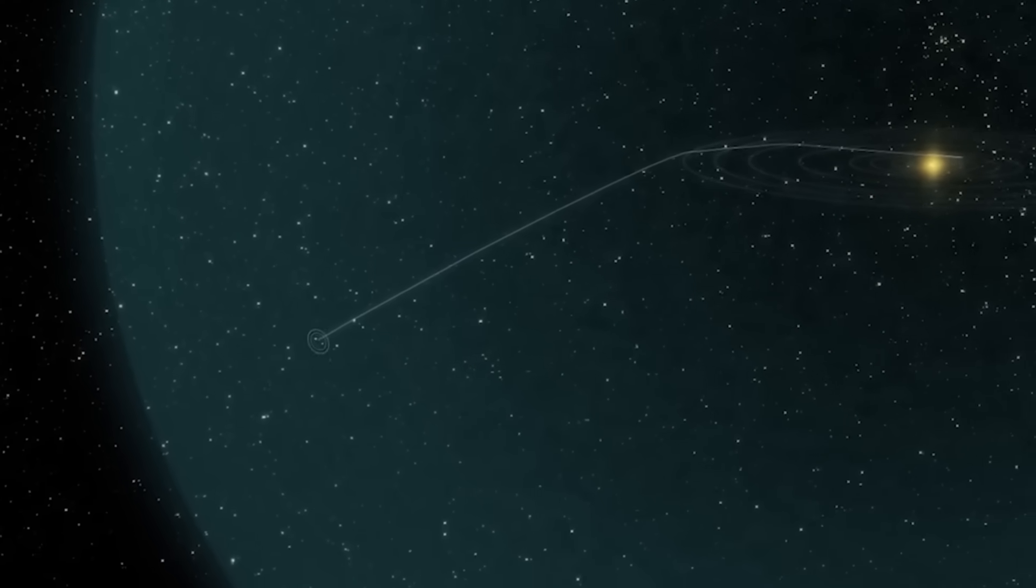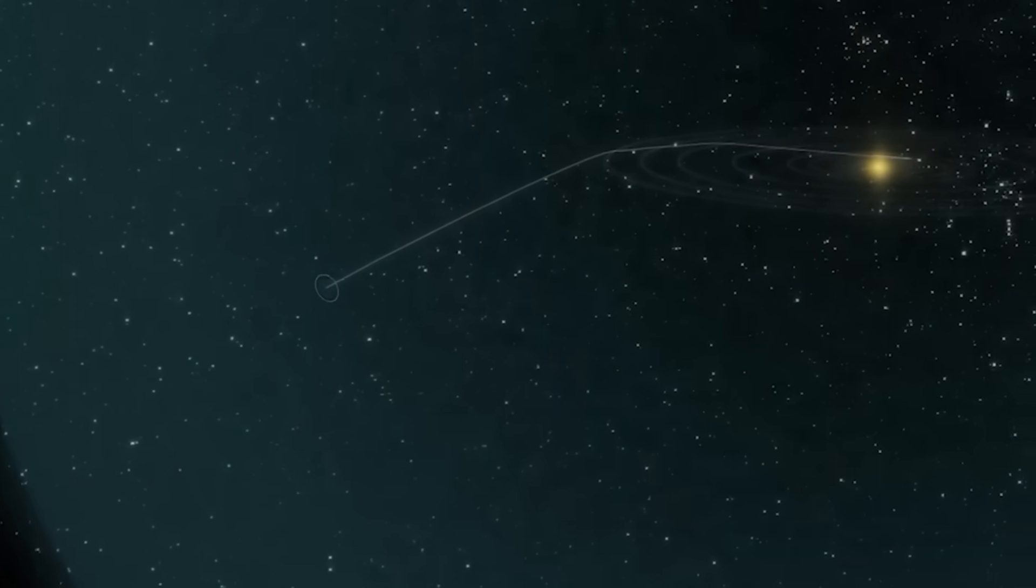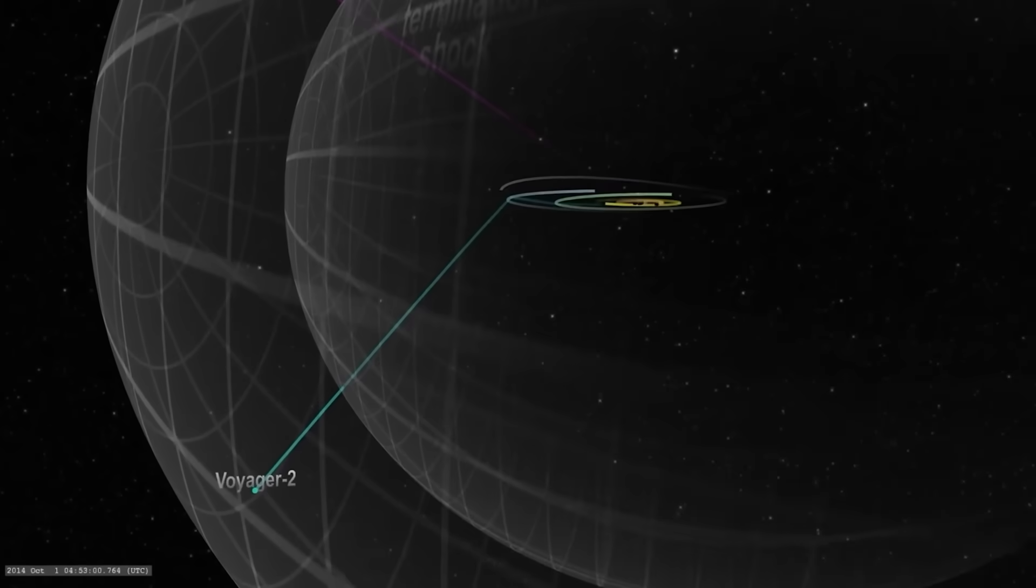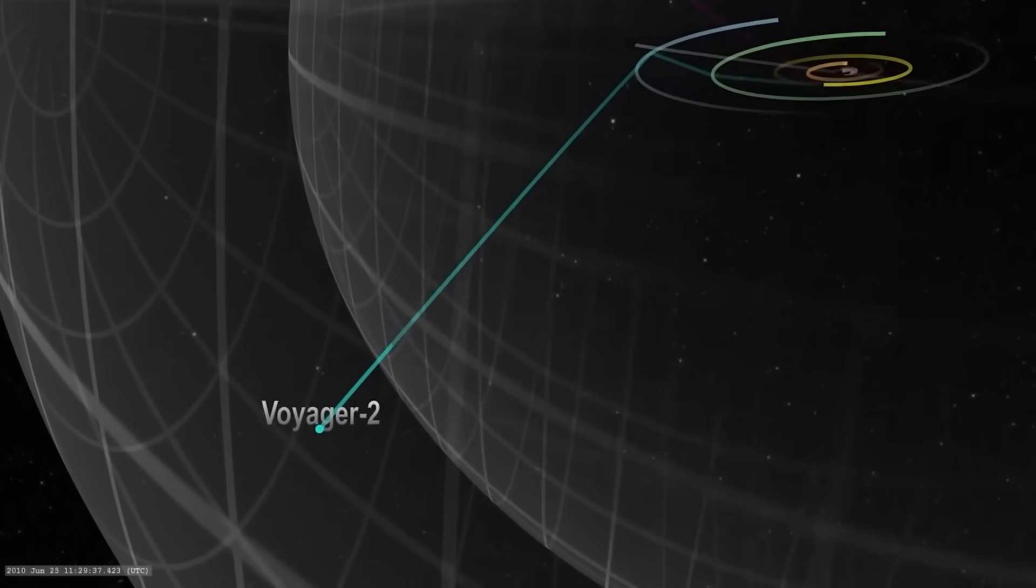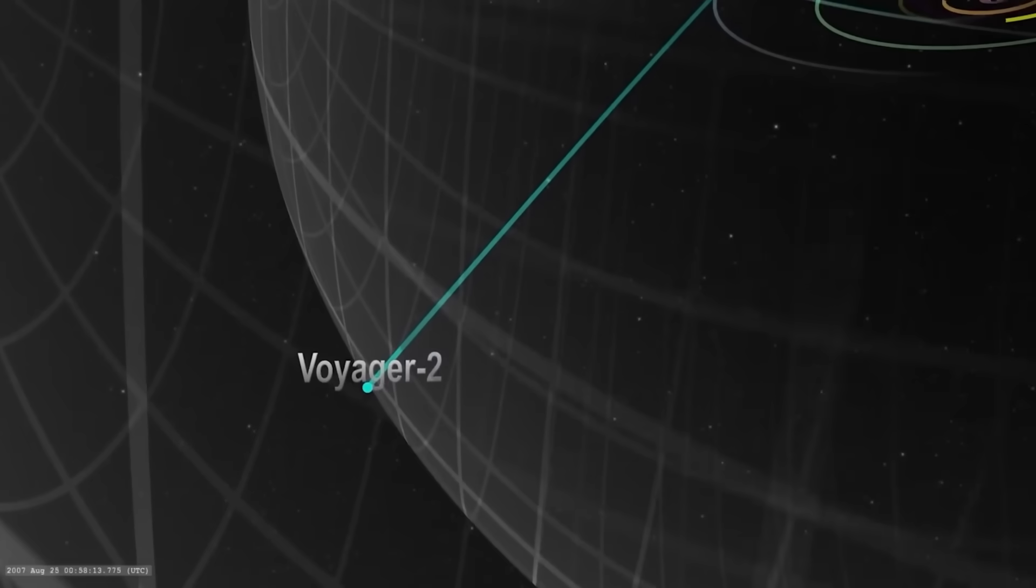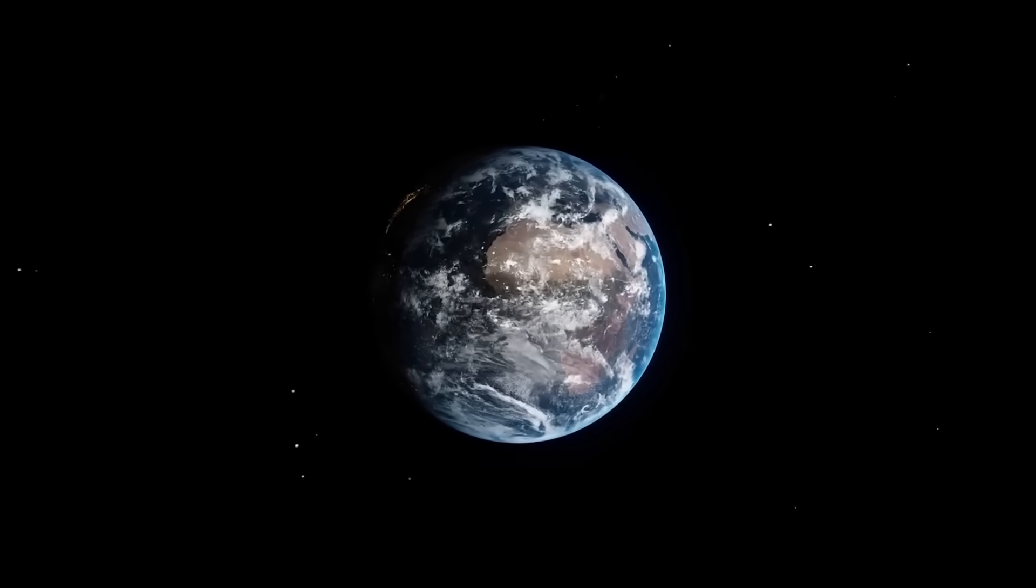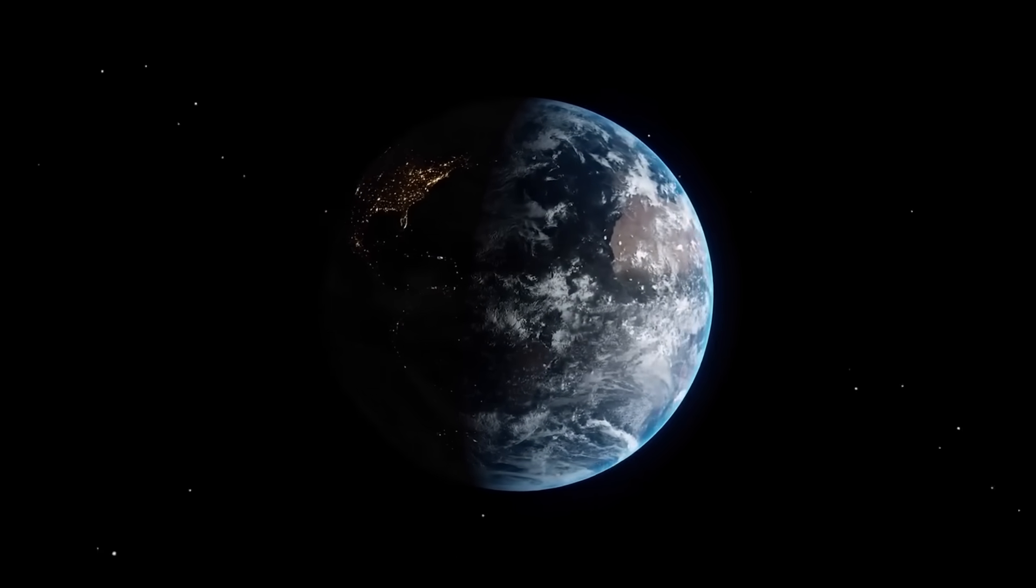The implication is disturbing. Earth's protection isn't permanent. It fluctuates. It can fail. And Voyager 2's sharp transition into the galactic medium revealed just how thin that veil truly is. The cosmos beyond isn't empty. It's violent, unpredictable, and much closer than we imagined.